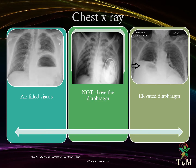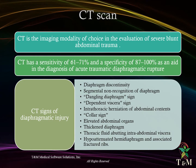CT scan is the imaging modality of choice in the evaluation of severe blunt abdominal trauma. CT scan has a sensitivity of 61–71% and a specificity of 87–100% as an aid in the diagnosis of acute traumatic diaphragmatic rupture. Signs on CT scan include: diaphragmatic discontinuity, segmental non-recognition of the diaphragm, dangling diaphragmatic sign, dependent viscera sign, intrathoracic herniation of abdominal contents, collar sign, elevated abdominal organs, thickened diaphragm, thoracic fluid abutting intra-abdominal viscera, hypoattenuated hemidiaphragm, and associated fractured ribs.